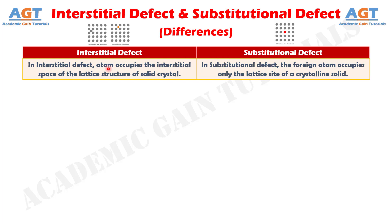Difference number 1. In interstitial defect, the atom occupies the interstitial space of the lattice structure of a solid crystal, whereas in substitutional defect, the foreign atom occupies only the lattice site of a crystalline solid.